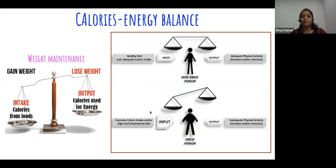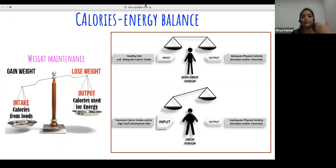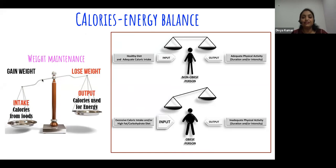Here you see a non-obese person and an obese person. If you take a healthy diet with adequate calorie intake and the same person has adequate physical activity, there is balance between input and output, and the person is lean, healthy, or non-obese. On the other hand, where there is more input - high fat, high carbohydrate diet with excess calorie - but the person has a sedentary lifestyle with inadequate physical activity, more sitting watching TV or playing games - if input overweighs output, there goes excess fat accumulation and the person becomes obese.